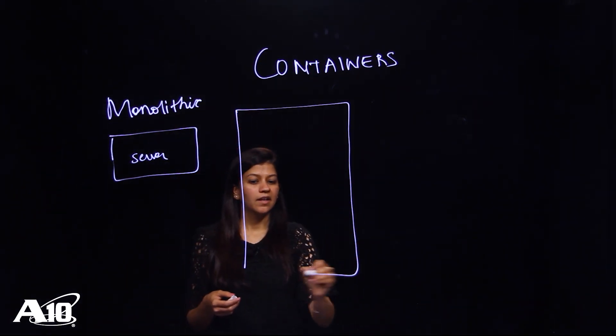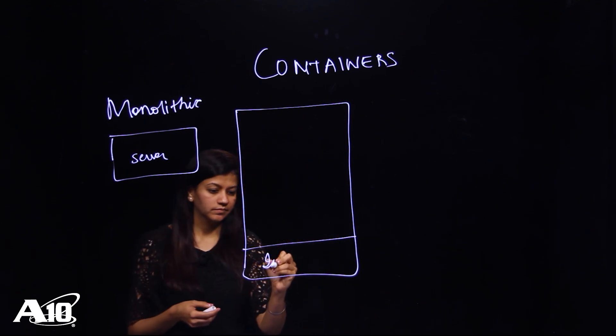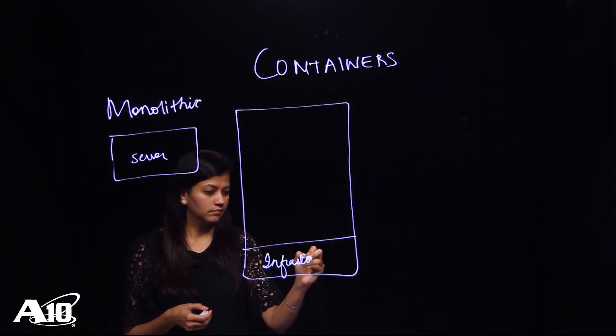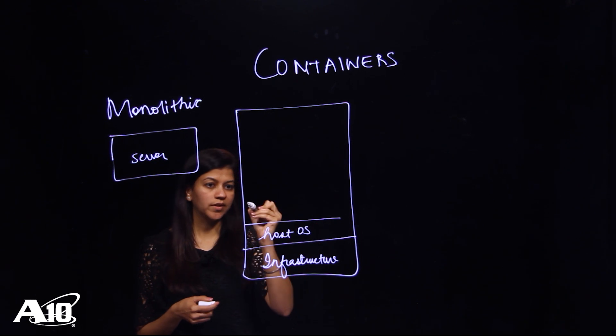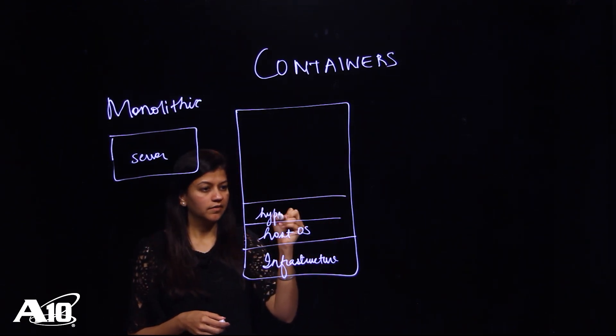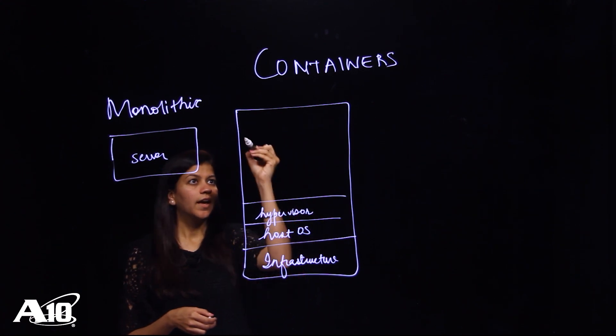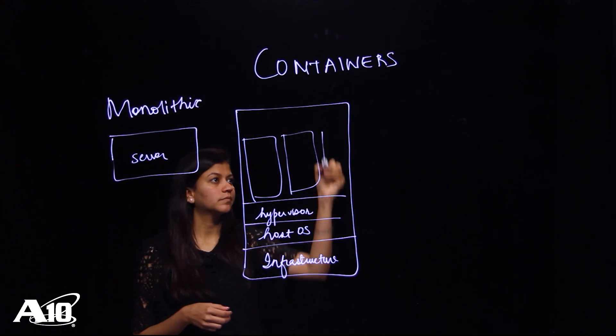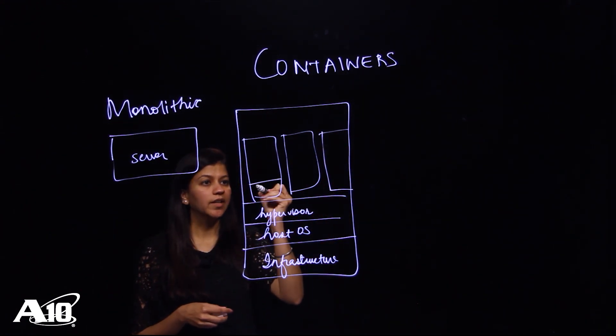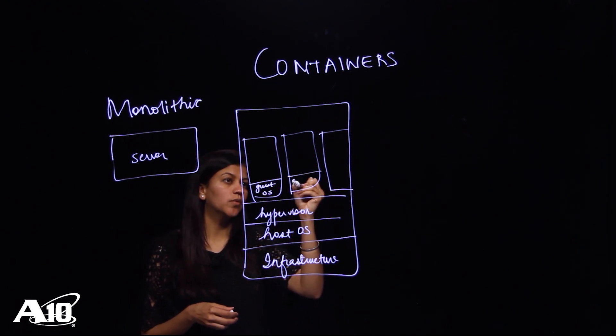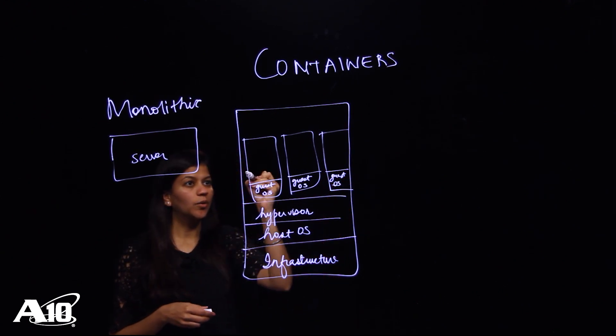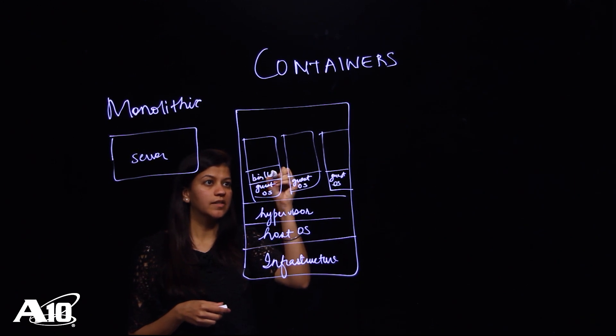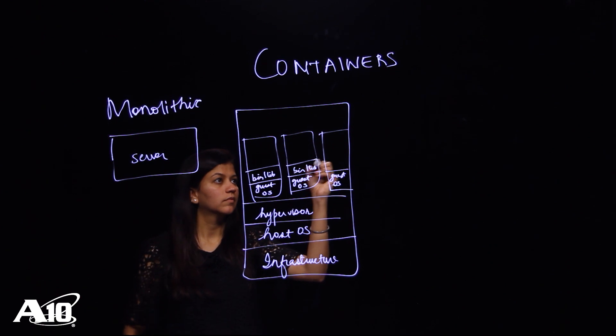Here I have my infrastructure, on top of this I have my host OS, then we have our hypervisor and this is what lets you build your individual VMs. Now each VM has its guest operating system, so on each one you could have an independent OS running. On top of that you have your binaries and libraries, and then you build your apps.